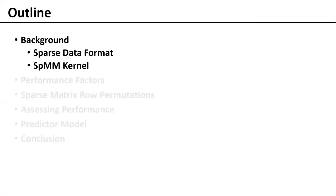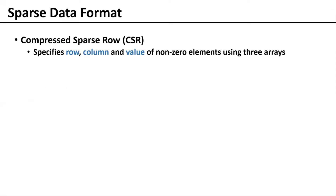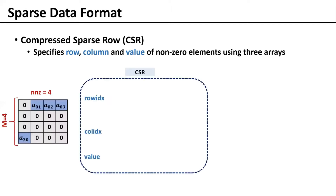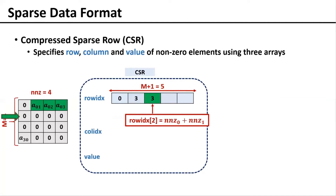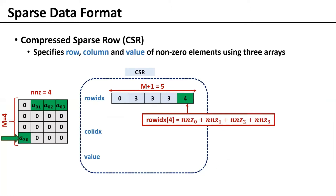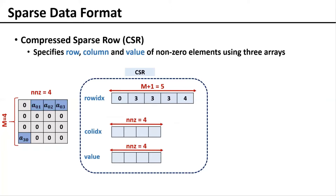Starting with background. Compressed sparse row format is a common sparse data structure. CSR uses three one-dimensional arrays to specify location and value of non-zero elements in a sparse matrix. For array row IDX, it has n plus 1 entries for a matrix with m rows starting with initial value of 0; each entry at i's location shows the total number of non-zeros in the first i rows. Col IDX and Val store column and value for all the non-zeros in order of their occurrence across rows.